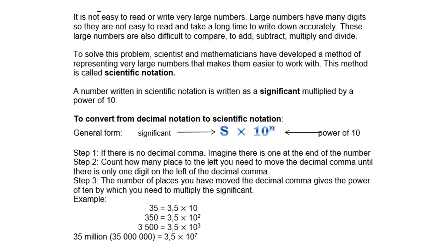Example: take 35. If I move the comma once to the left — remember the comma is just behind the 5 — I get 3.5 times 10. If I take 350, the comma will move 2 places, so 3.5 times 10 to the power of 2. Remember, we only want one significant digit in front of the comma. 3,500 — the comma must move 3 times, so 3.5 times 10 to the power of 3. 35 million is 3.5 times 10 to the power of 7.